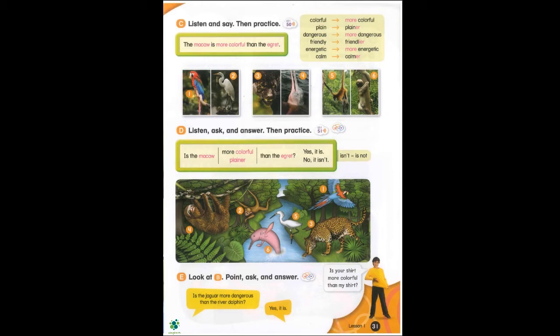The macaw is more colorful than the egret. Colorful. More colorful. Plain. Plainer. Dangerous. More dangerous. Friendly. Friendlier. Energetic. More energetic. Calm. Calmer. The macaw is more colorful than the egret. The egret is plainer than the macaw. The jaguar is more dangerous than the river dolphin. The river dolphin is friendlier than the jaguar. The spider monkey is more energetic than the sloth. The sloth is calmer than the spider monkey.